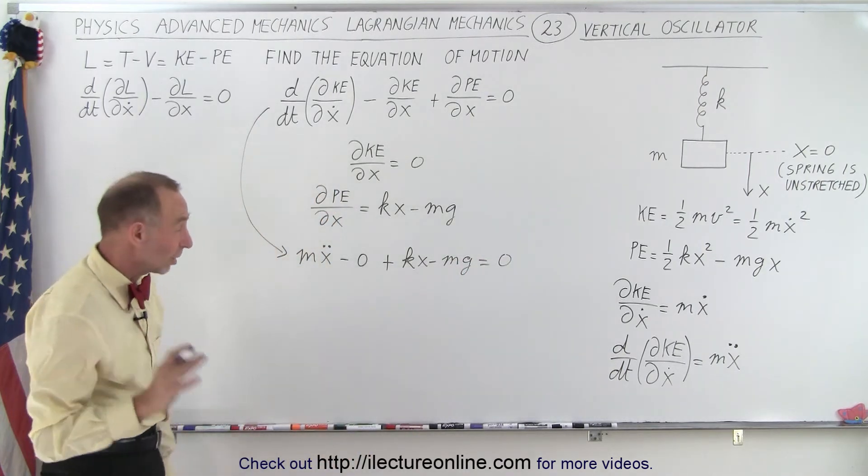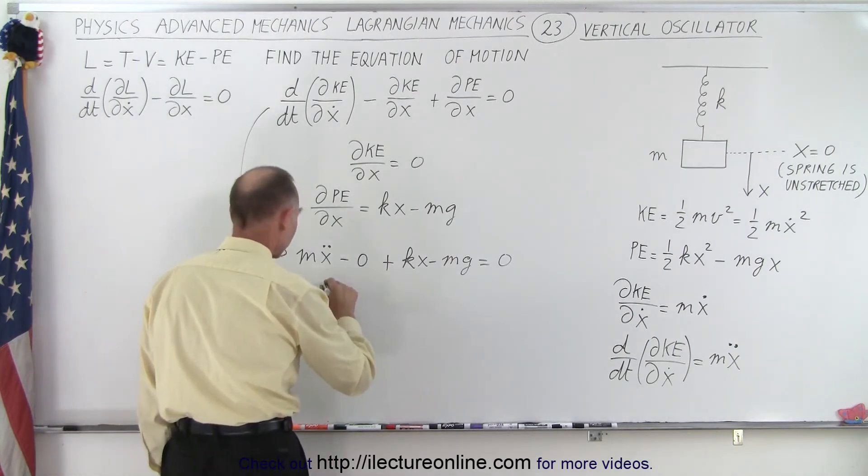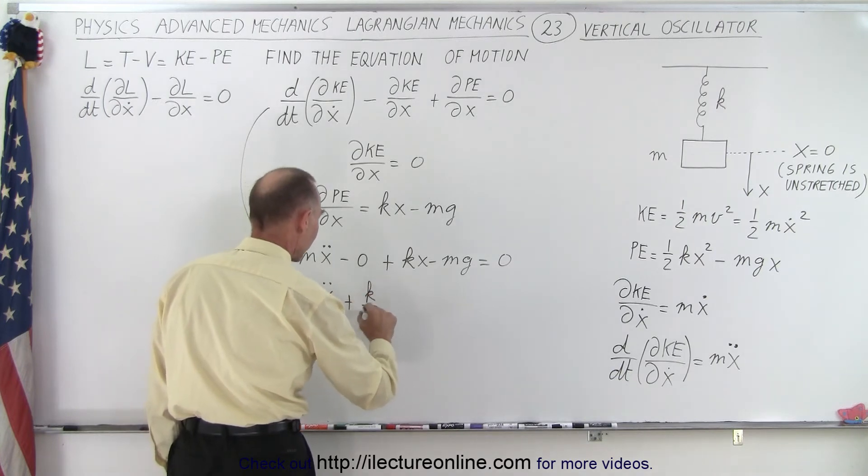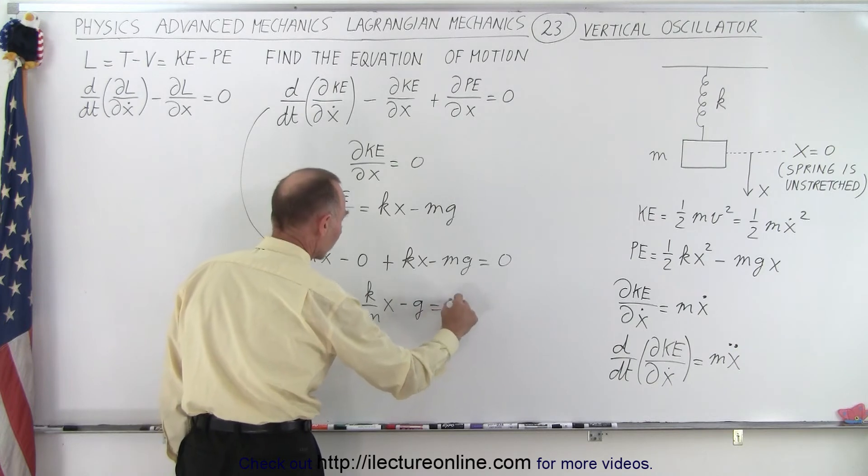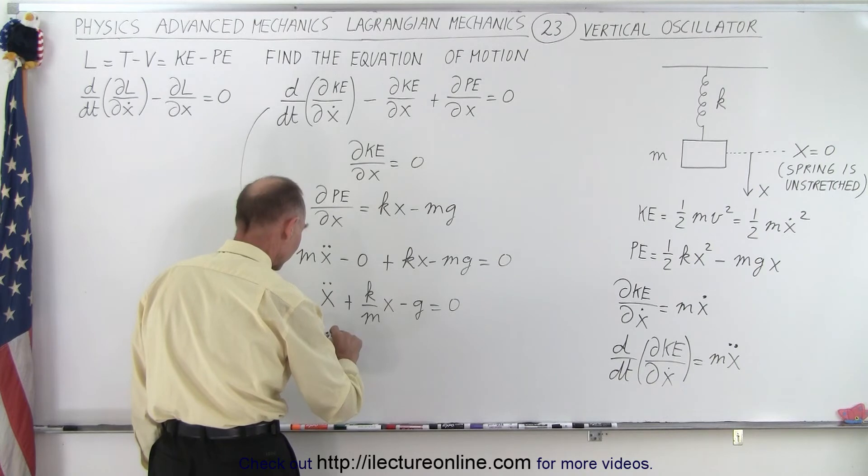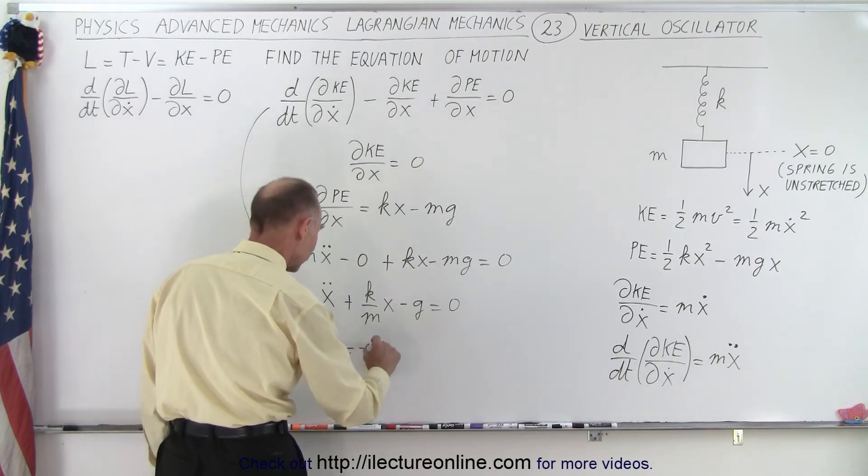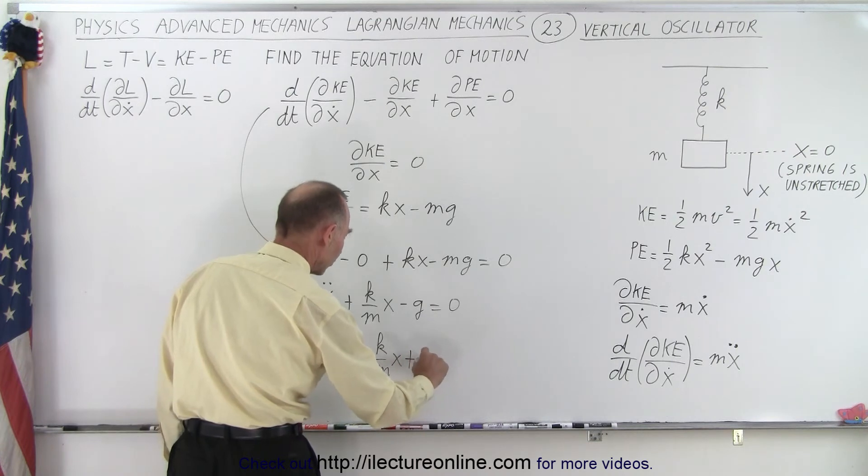Now cleaning that up and dividing both sides by m, we get x double dot plus k over m times x minus g equals zero. Or if I bring this across the other side, I can say that x double dot, which is acceleration, is equal to minus k over m times x plus g.